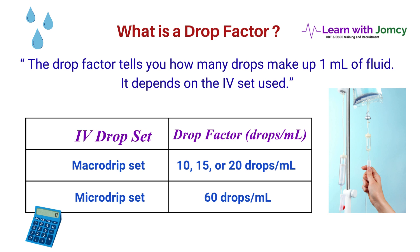What is a drop factor? The drop factor tells you how many drops make up one milliliter of fluid. It depends on the IV set used. A macro drip set delivers 10, 15 or 20 drops per ml, while a micro drip set delivers 60 drops per ml.